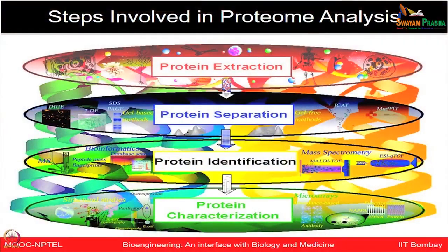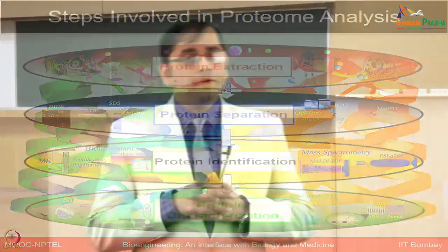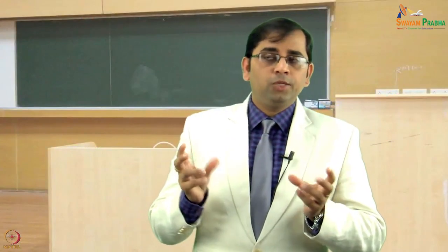For any kind of complex proteome analysis, there are certain major steps involved. Whether we talk about human, bacteria, or plant samples, the first thing is to extract the protein out of that complex system — you want to rupture all the membranes, get all the cellular contents out, and extract only the proteins, while getting rid of nucleic acids, lipids, carbohydrates, etc. Then you want to separate the proteins, which could be based on chromatography or electrophoretic techniques.